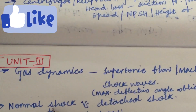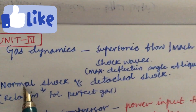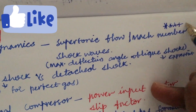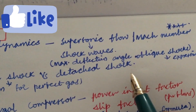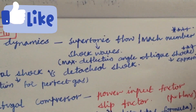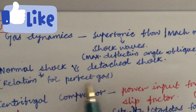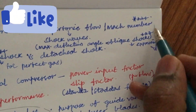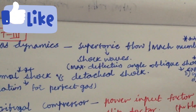Unit 3 is all about gas dynamics and supersonic flow. The Mach number is very important in relation to supersonic flow and shock waves. The maximum deflection angle and the oblique shocks expression has been asked several times and may be a gunshot question this time. The differences between normal shock and detached shock, and the relation for a perfect gas, is also a very important question. Based on these concepts we will be getting 5A as well as 5B — do not forget to work out the related problems.